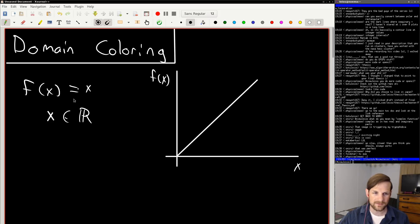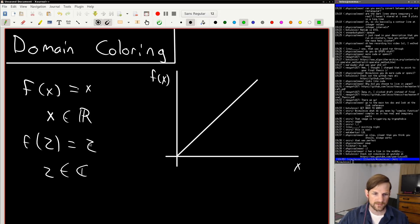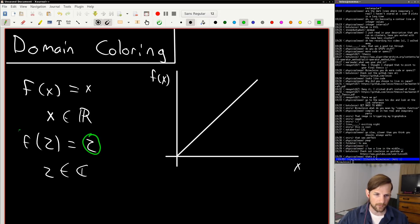However, what if instead of using x, which is purely in real space, we use another variable z and we have the same function f(z) = z. But in this case z is in complex space, and here I'm using this weird C to denote complex space. Well this gets a little bit tricky because now both z and the output of z in here have a real and an imaginary component.